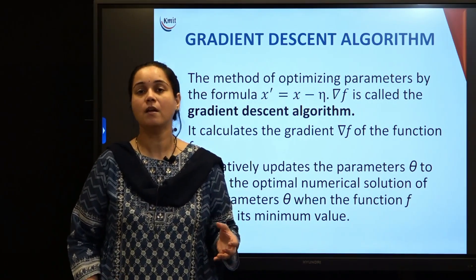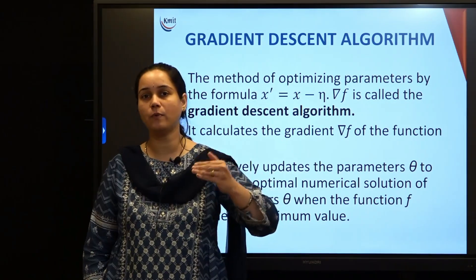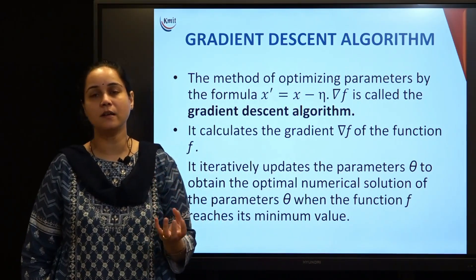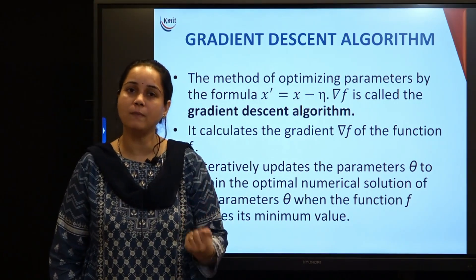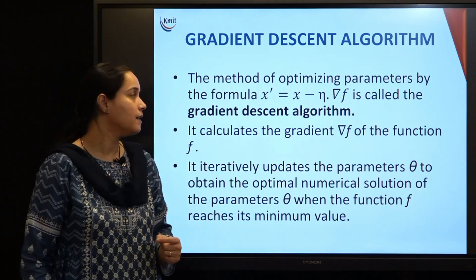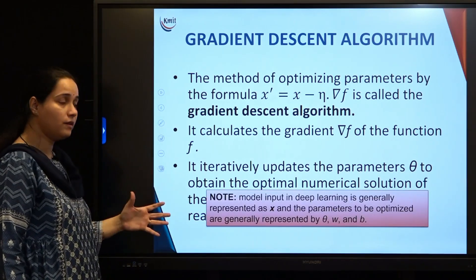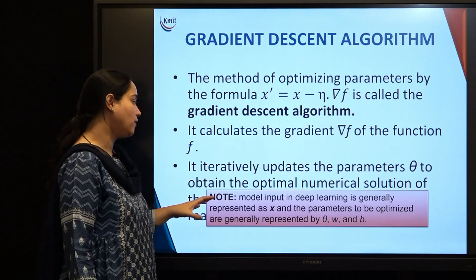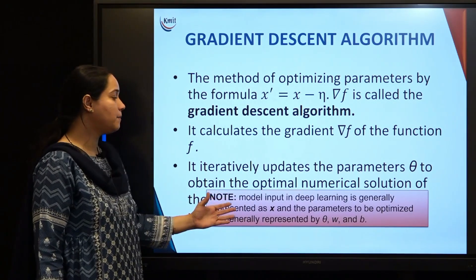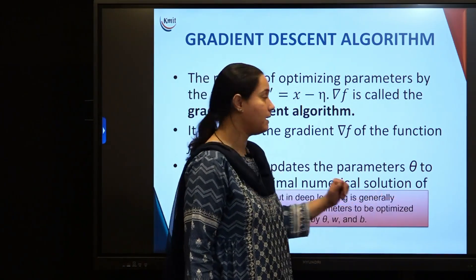The most minimum value of the loss function is where you mark your updated weights and parameters as the optimal solution — the best parameters to achieve minimum loss. Step by step you approach that minimum point and update your parameters until you reach the optimal value. In deep learning, the model input is generally represented as x, and the parameters to be optimized are represented by theta — weights and biases.